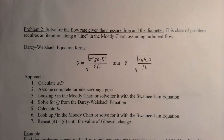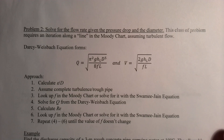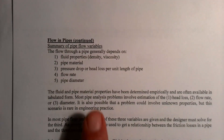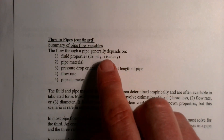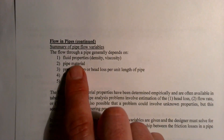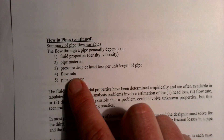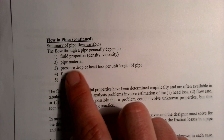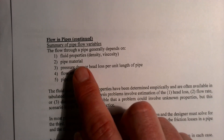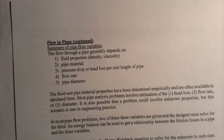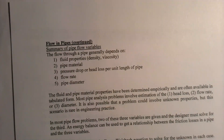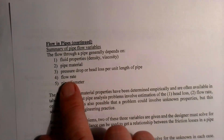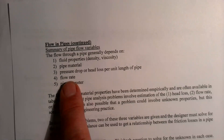In the last example, we looked at how you could do the head loss calculation using the Moody chart. Now I'm going to do a new problem where we are finding the flow rate. We said the head loss is the easiest because the energy losses depend on the friction factor, and the friction factor depends on Reynolds number and relative roughness. When you don't know the flow rate — if that's the unknown — then you don't know the velocity, which means you don't know the Reynolds number, and so you don't know the friction factor.